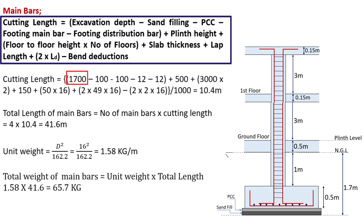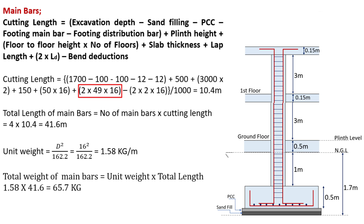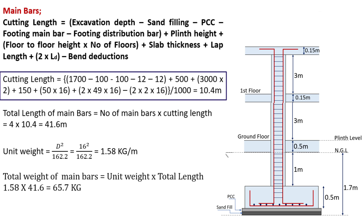Excavation depth is 1.7 m, sand filling 100 mm, PCC 100 mm, footing main bars 12 mm, distribution bars 12 mm, plinth height 500 mm, floor to floor height 3000 mm, number of floors 2, slab thickness 150 mm. Lap length equals 50 times D, that is 50 × 16 mm. Development length equals 49 times D. Bend deductions equal 2 times 2D, since the bar is bent at both sides by 90 degrees. On substituting all these values, the cutting length of main bars equals 10.4 m.